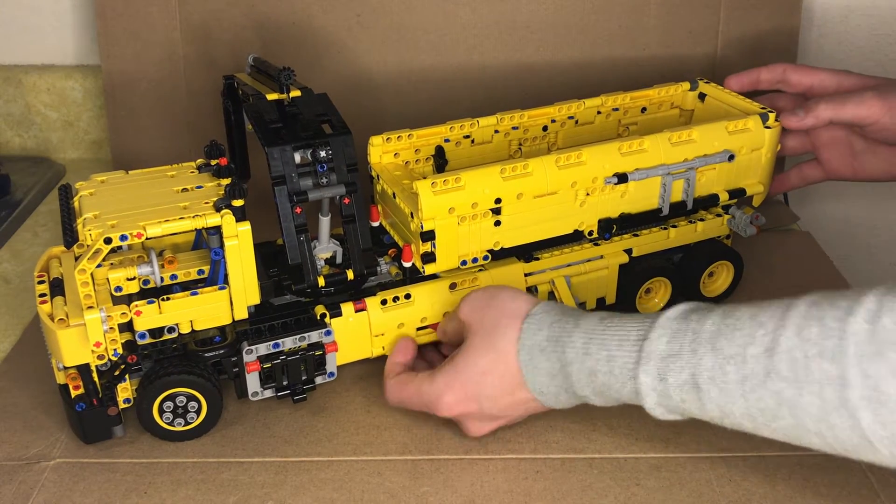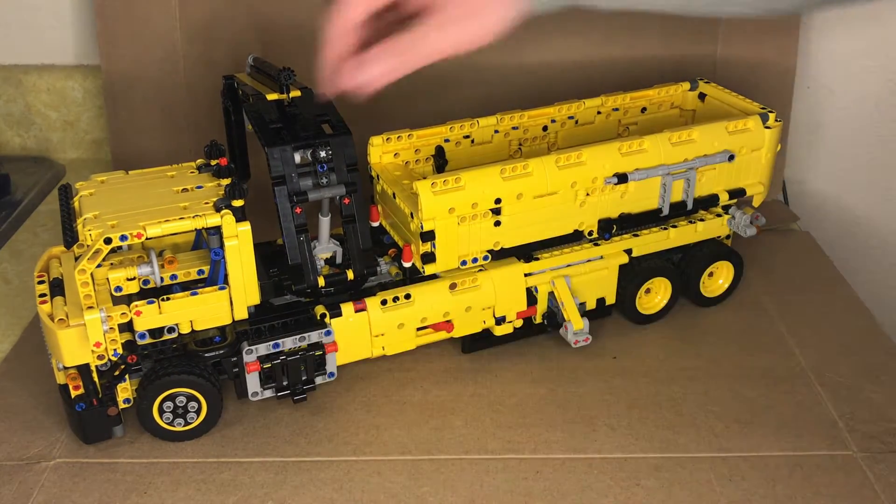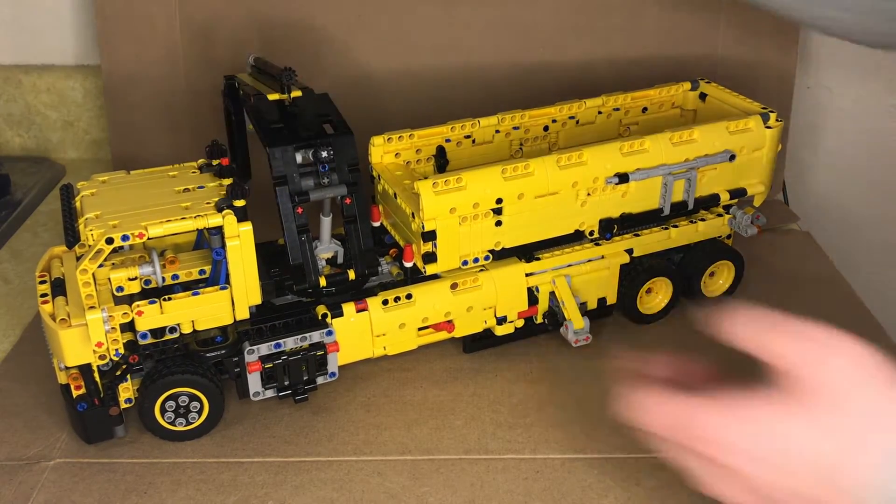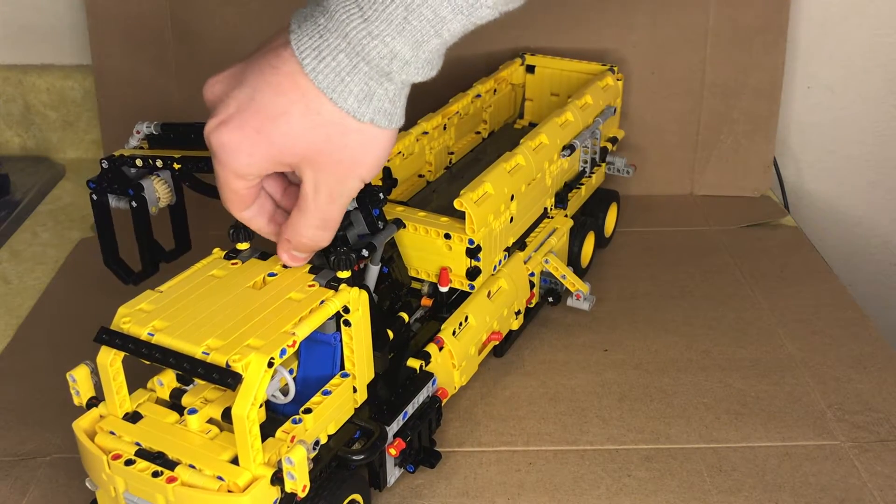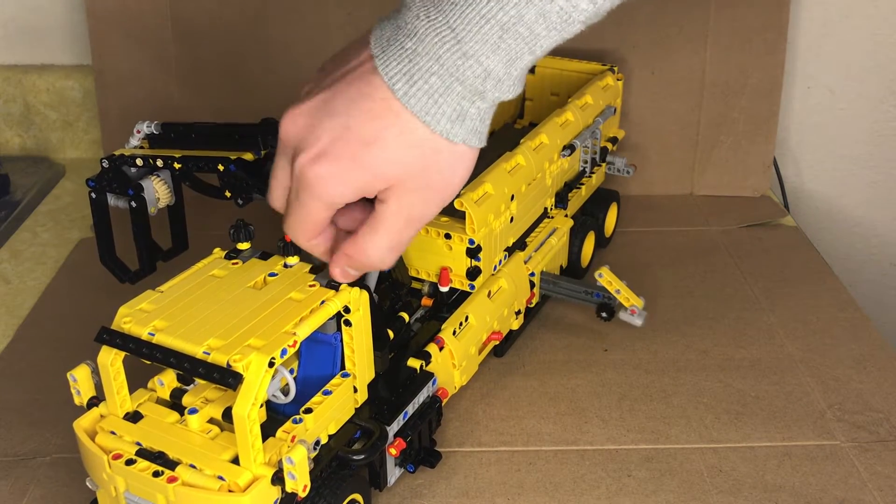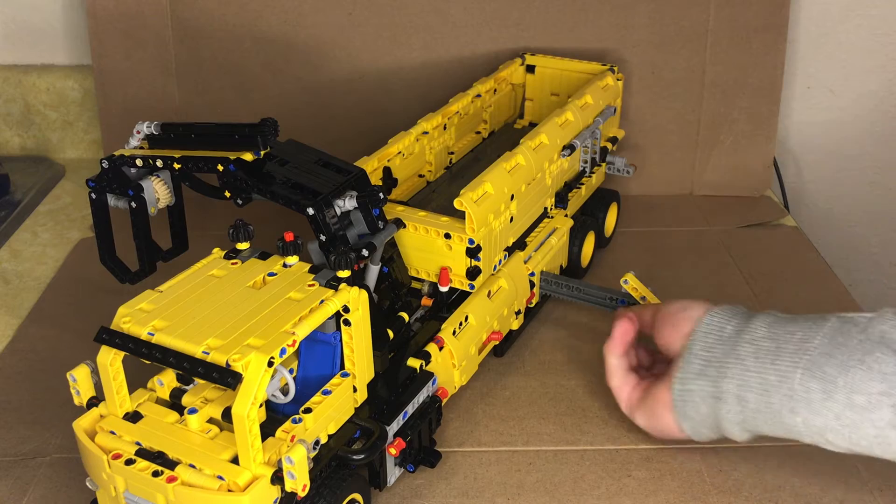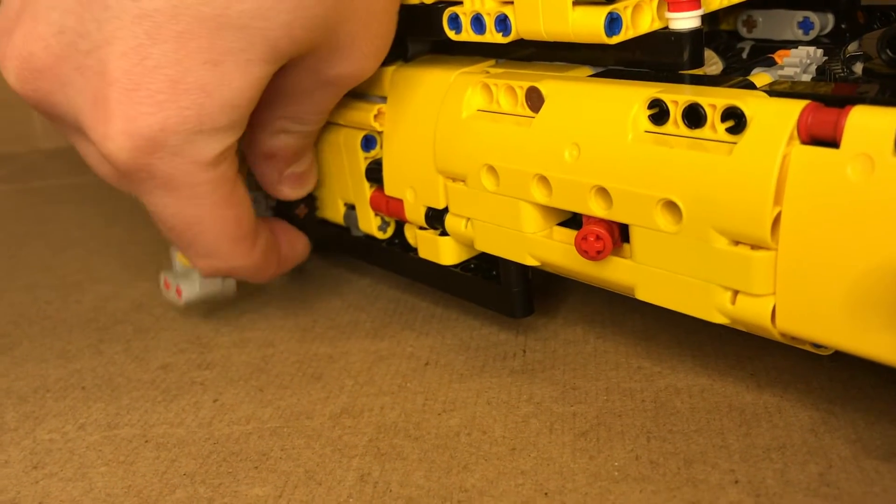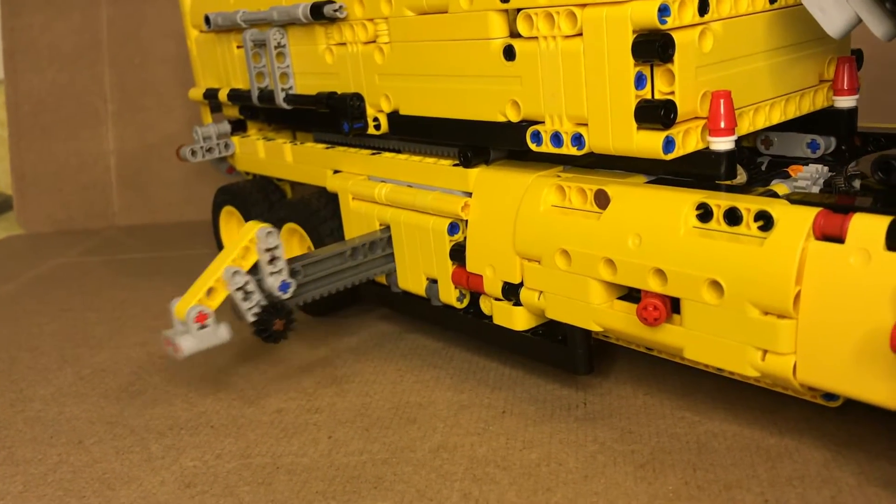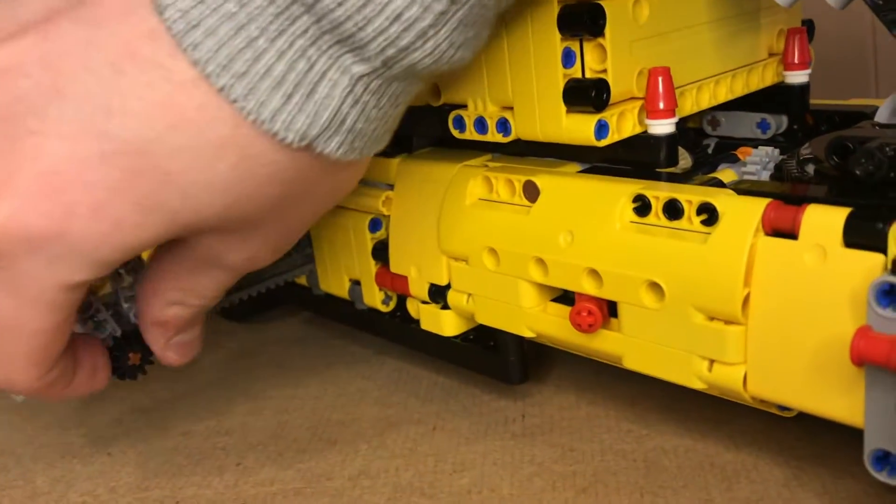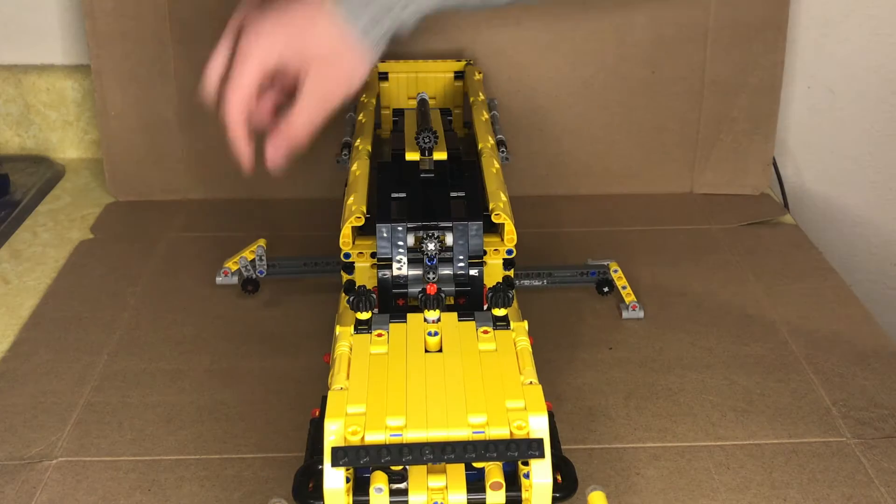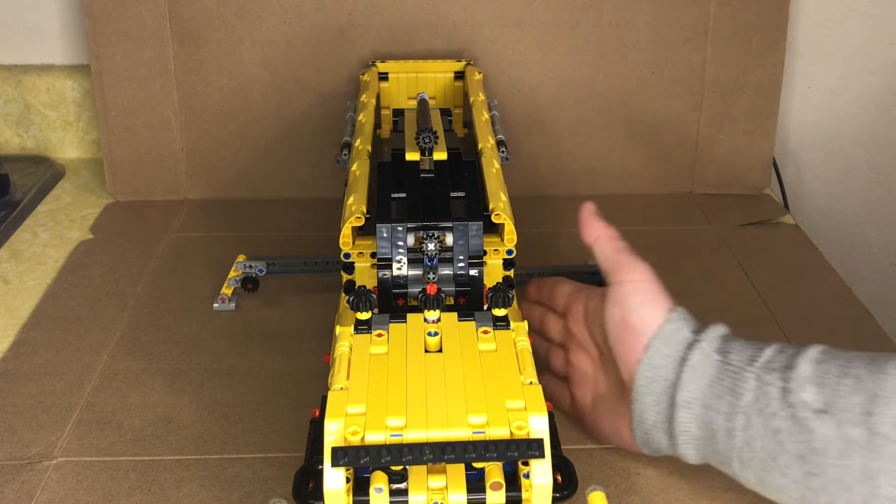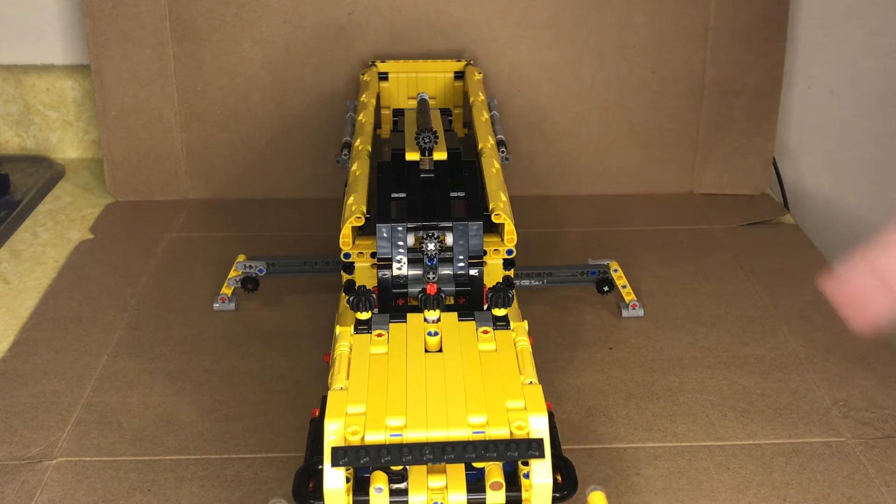There is a way to extend it. Grabbing this, you can actually go towards the outriggers. Then when you rotate this, it actually extends it up. I believe it's 11 studs longer, 11 modules longer on either side.